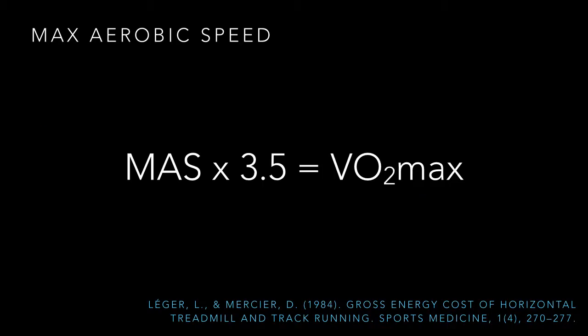Laguerre and Mercier were able to show that MAS is closely correlated to VO2 max by the use of this equation. In 1984, they studied about 130 subjects and measured their full VO2 max using the mask. They also did a simple treadmill test, compared the two results, and came up with this equation: if you take the MAS found from the simple treadmill test and multiply it by 3.5, you roughly get their VO2 max.